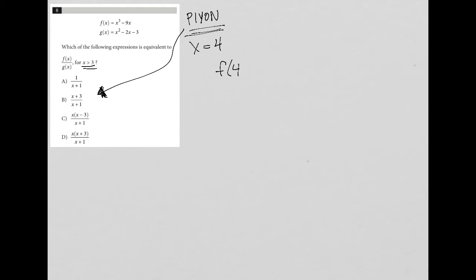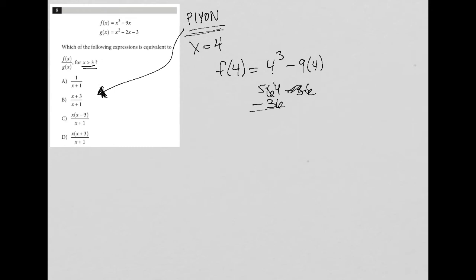So f(4) = 4³ - 9 × 4. We're not in the calculator section, so you'd want to work it out carefully. 4³ is 64, and 9 × 4 is 36, so 64 - 36 = 28. That's f(4).